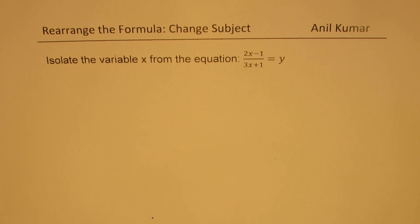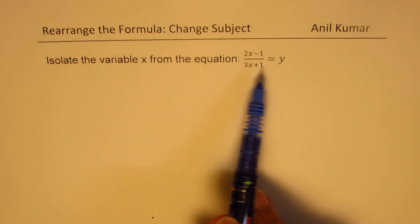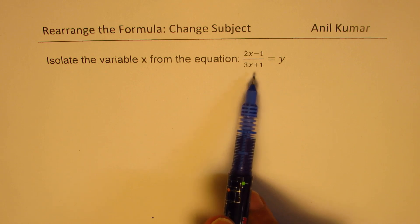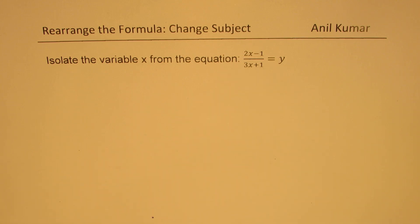I am Anil Kumar. Welcome to my series on arranging formulas to change the subject. The question here is to isolate the variable x from the equation 2x minus 1 divided by 3x plus 1 equals to y.